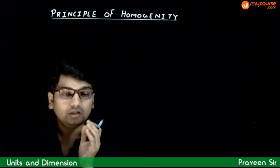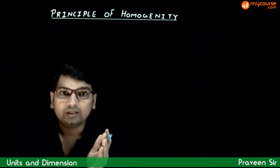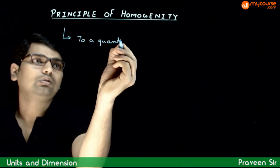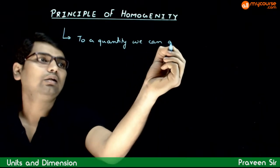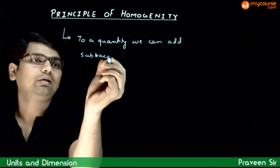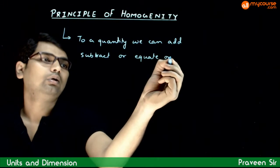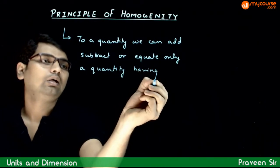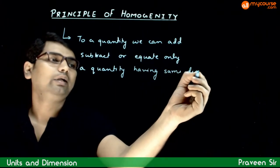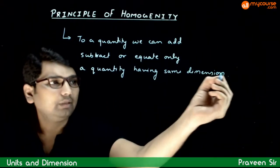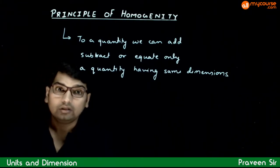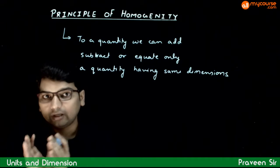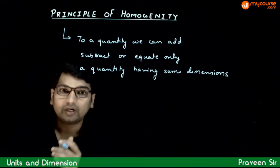So, to a quantity, we can add, subtract, or equate only a quantity that has the same dimensions. Agar dho quantities ke dimensions same nahi hai, to aap unko add, ya subtract, ya equate nahi kar sakte. Although, we can multiply two quantities having different dimensions — multiplication or division kiya ja sakta hai. Addition, subtraction, and equation nahi lagaya ja sakta.